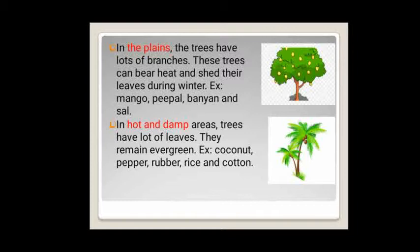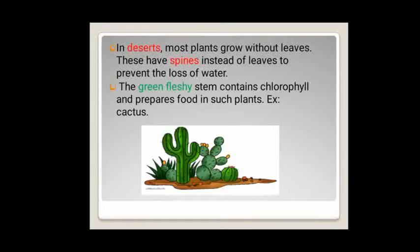Examples of evergreen plants are coconut, pepper, rubber, rice and cotton. In deserts, most plants grow without leaves because the leaves are changed into spines to prevent the loss of water, as it is very hot in desert areas. The green fleshy stem contains chlorophyll and prepares food for such plants. It also stores water. Examples are cactus.